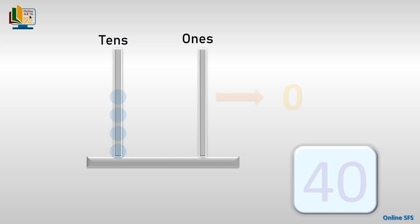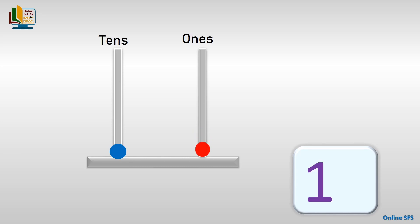Let's see the next one. What number is the abacus showing here? Superb! This is number eleven — one in the tens and one in the ones rod makes the number eleven.